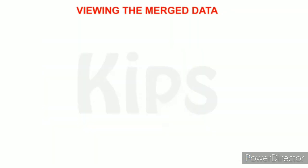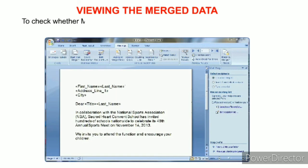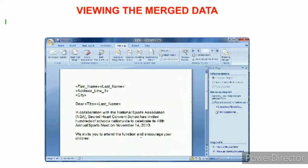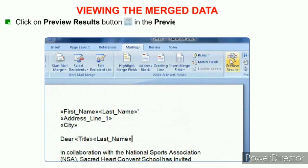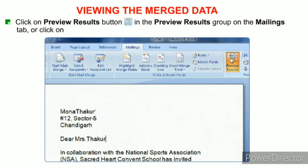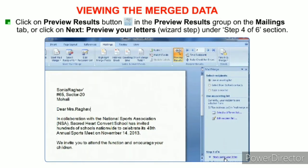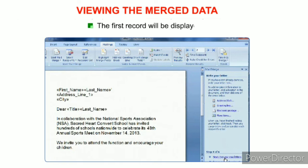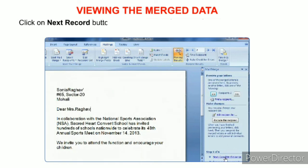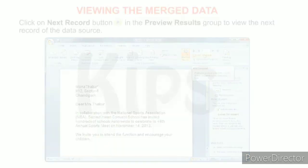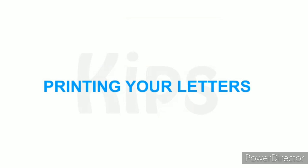To view the merge data and check whether MS Word has picked up the data source according to the merged fields, click the Preview Results button in the Preview Results group on the Mailings tab, or click Next: Preview Your Letters under Step 4 of 6. The first record will be displayed. Click the Next Record button in the Preview Results group to view the next record of the data source.